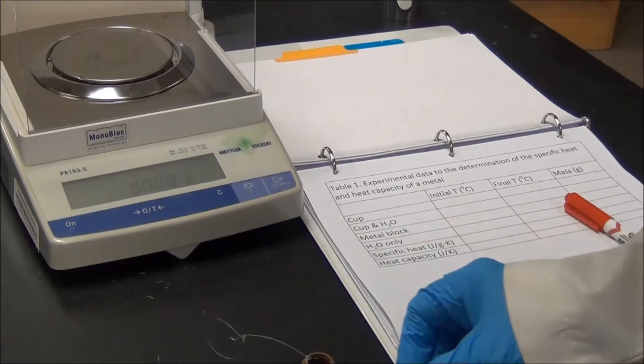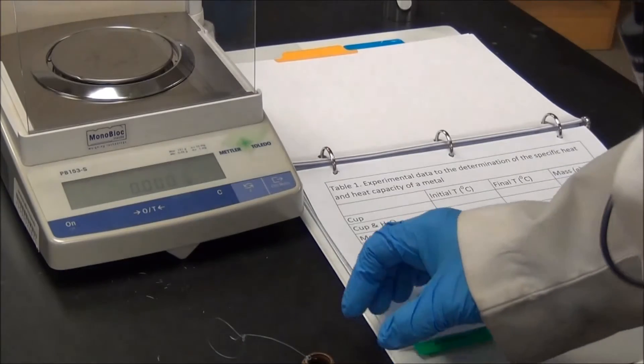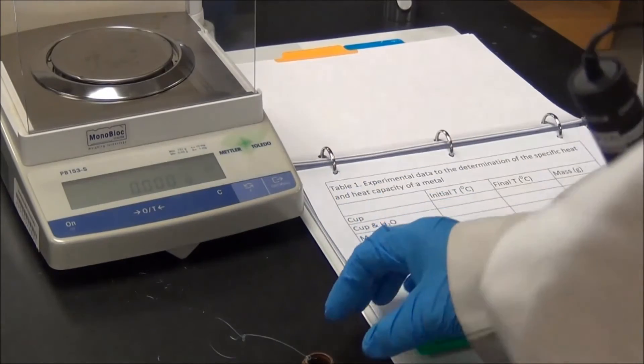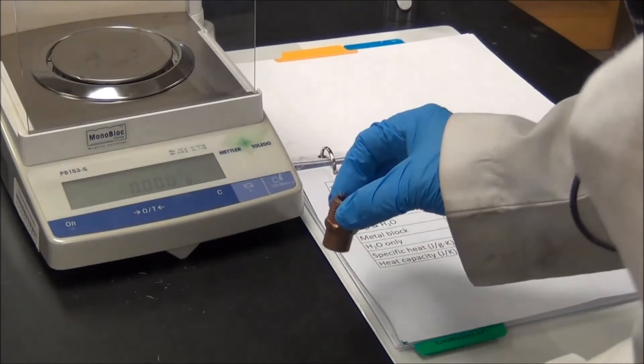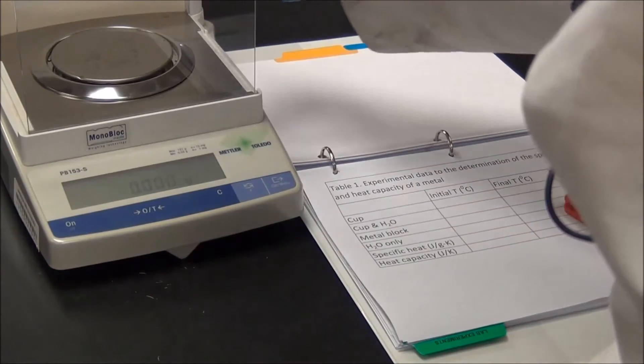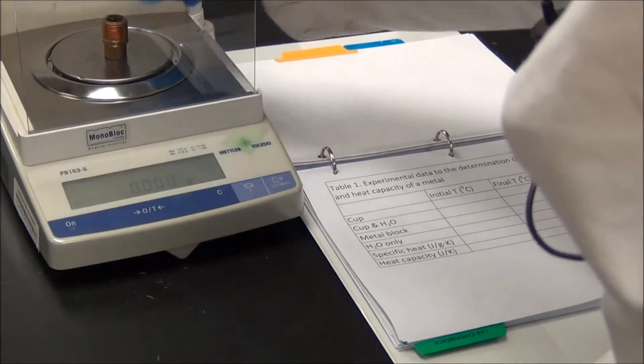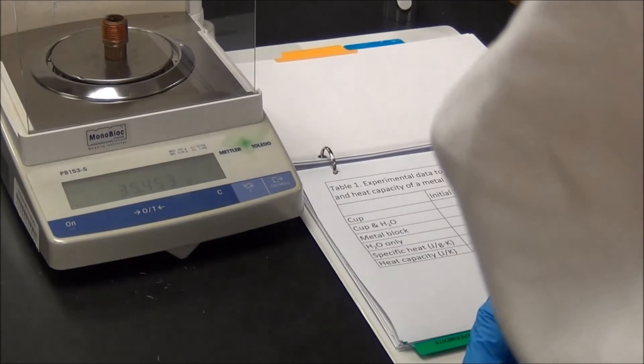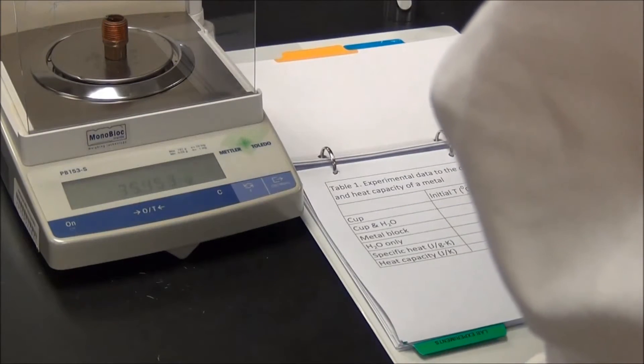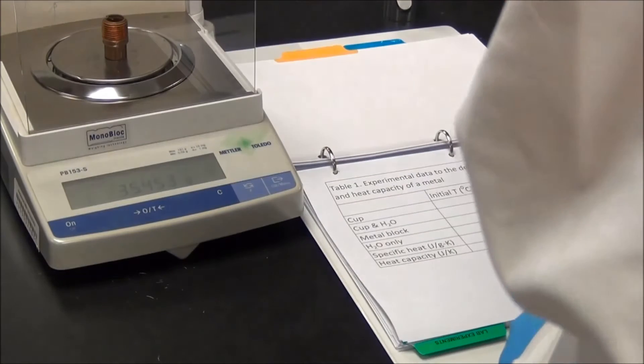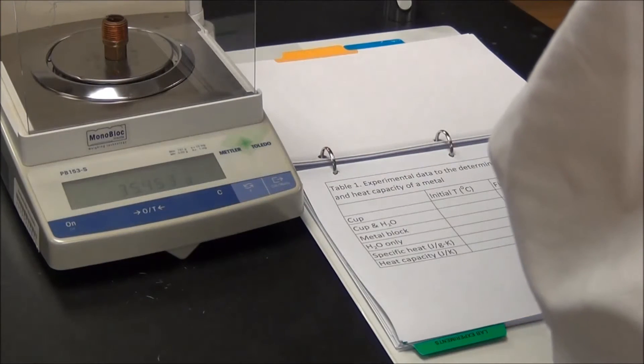And after it is turned on, the reading is 0.000 grams. Now it's time for us to make our measurement. We can place our metal piece on top of the balance. And then it reads 35.453.